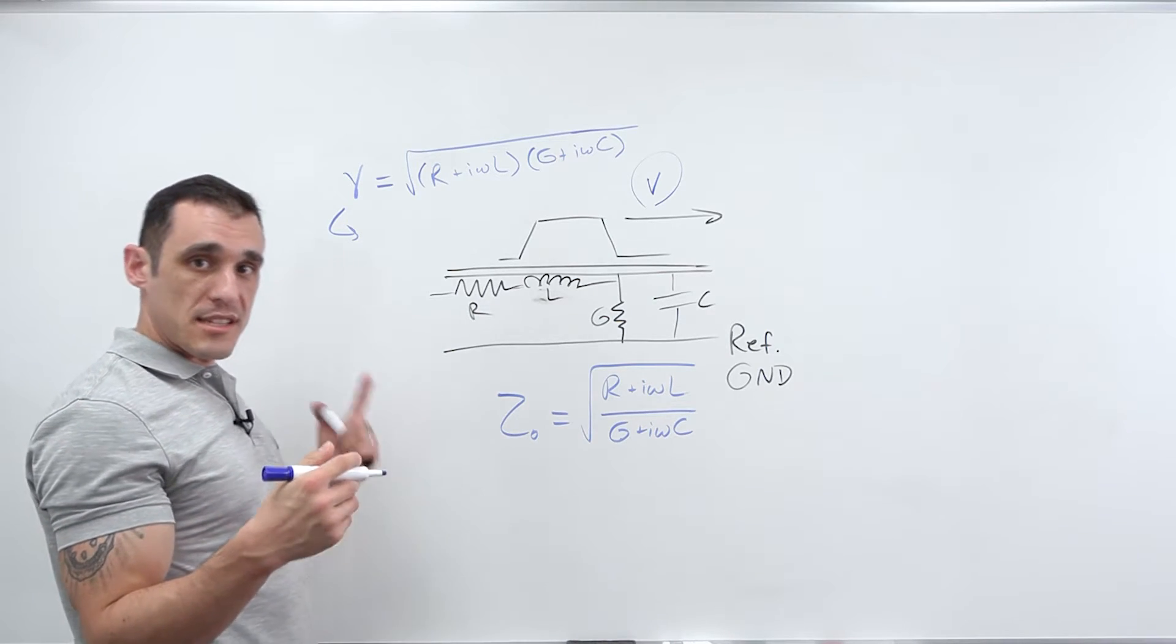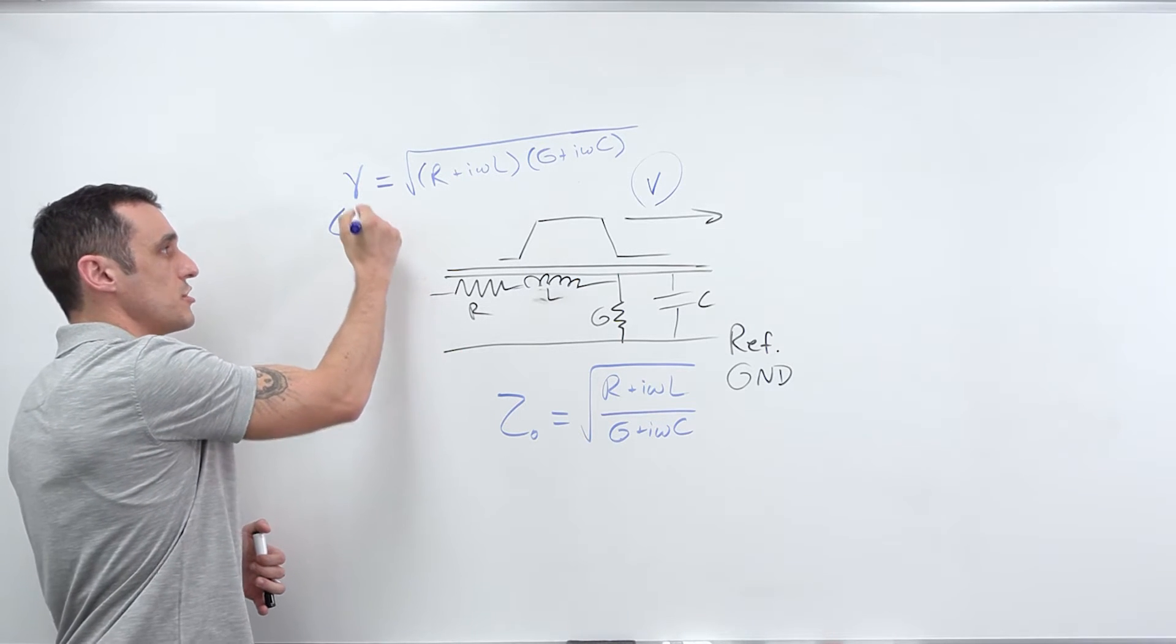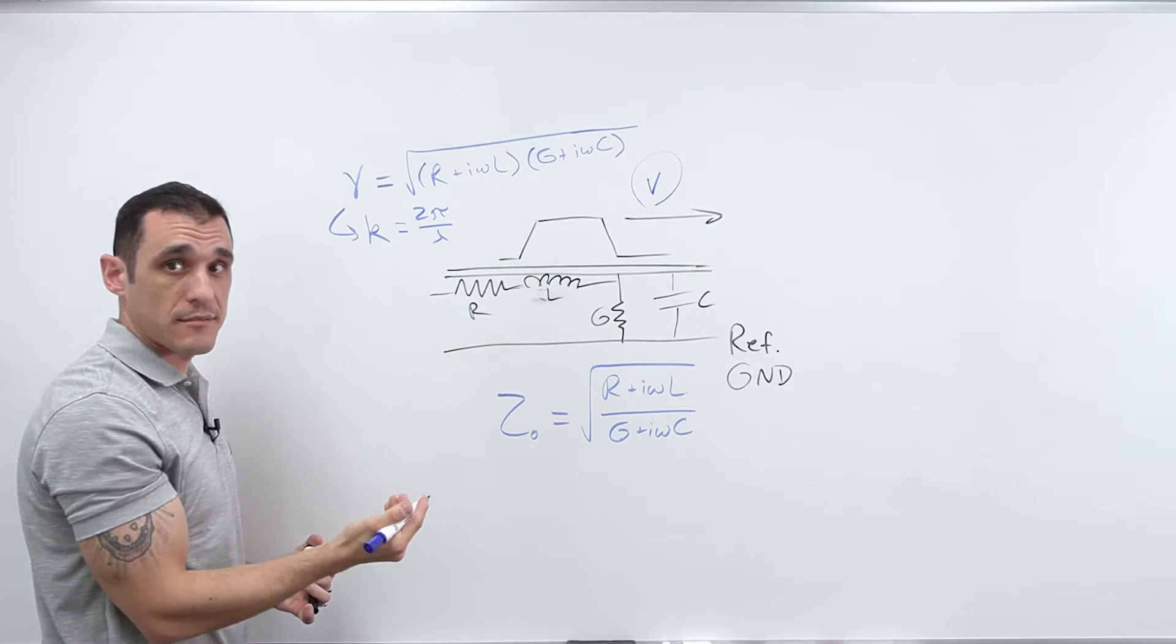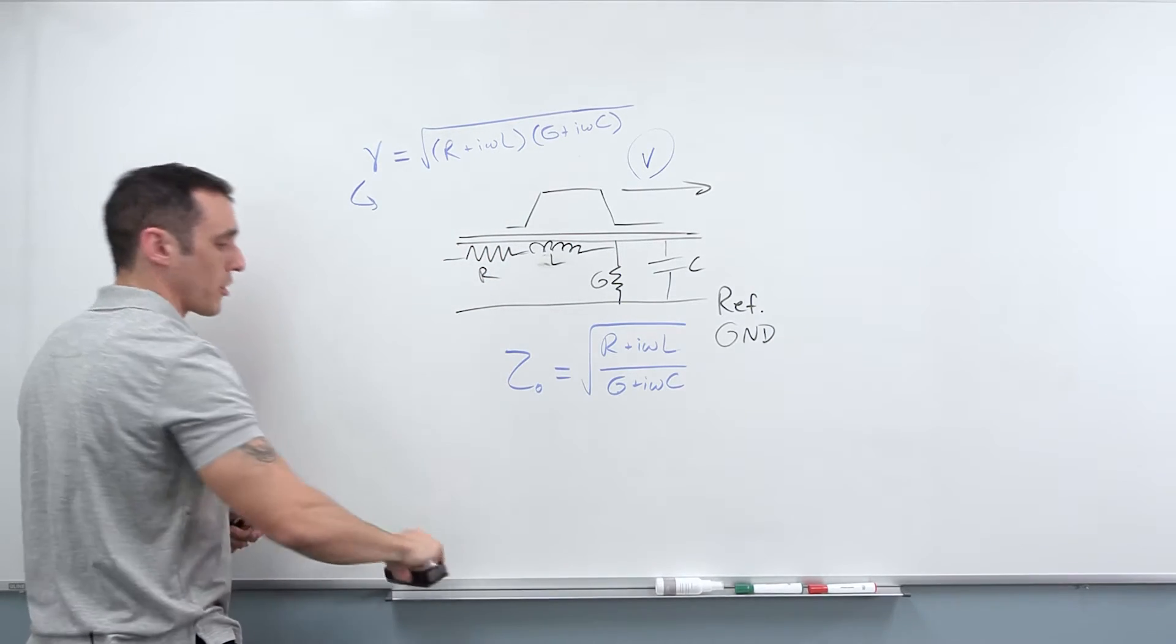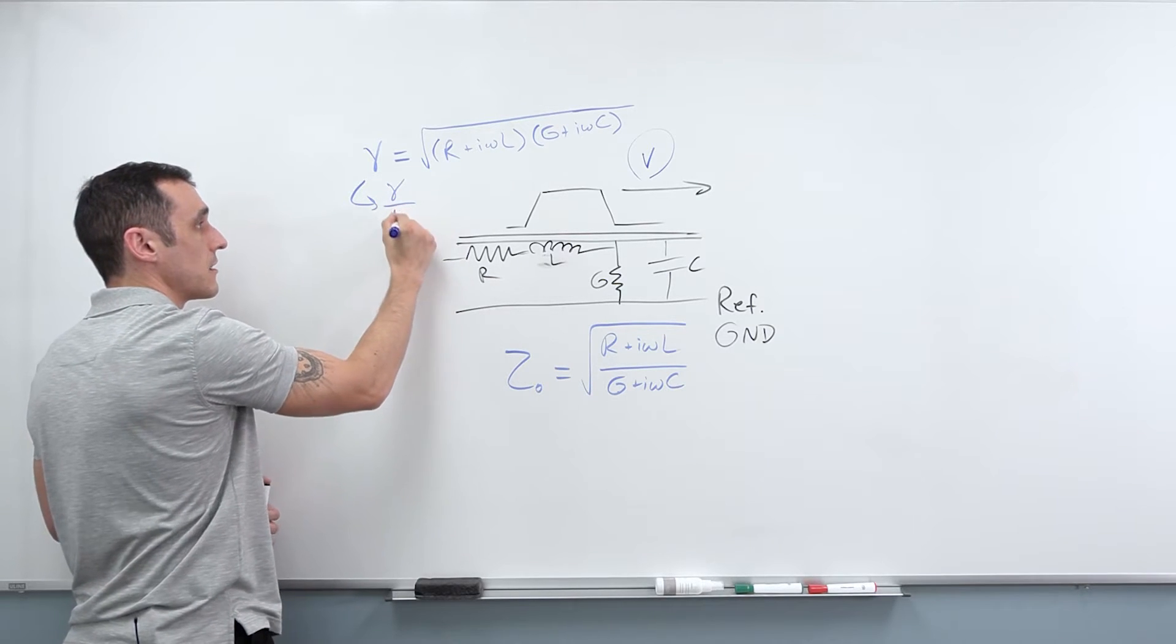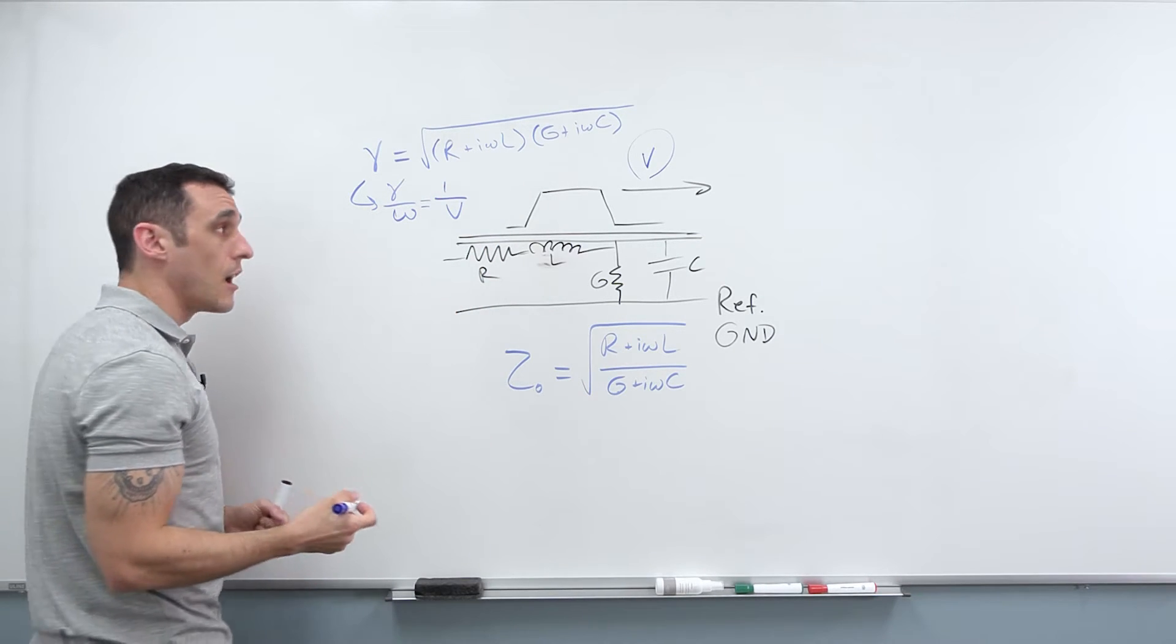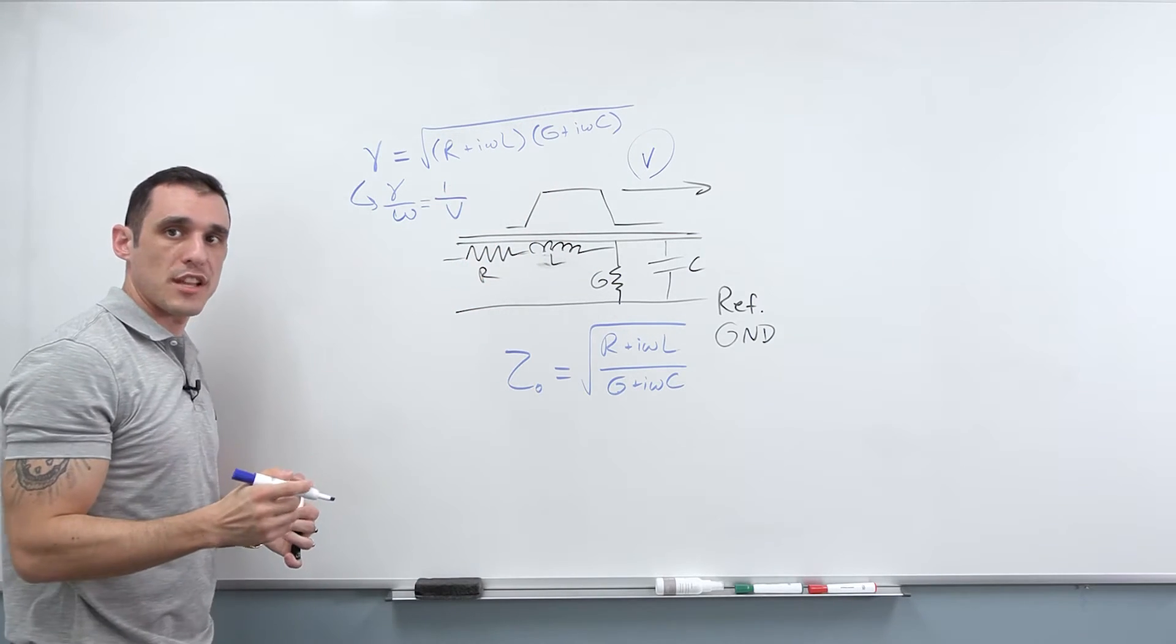So when you're dealing with just a single frequency or a single wavelength, usually what you would do is you would actually write this as K equals 2 pi divided by the wavelength. Now, what's important here is this. It's not so much that we have this. What's actually important here is that gamma divided by omega is equal to one over the velocity of this signal that's traveling on the transmission line.